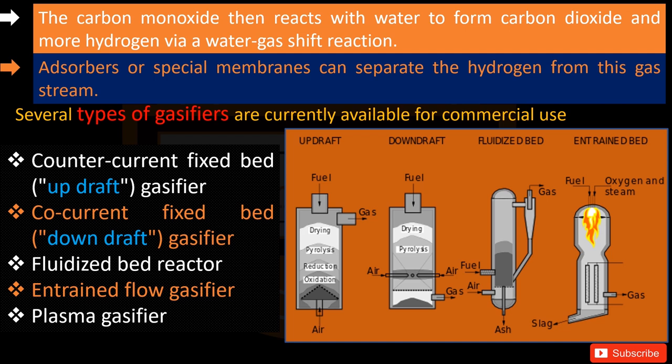In the entrained flow gasifier, a dry pulverized solid, an atomized liquid fuel, or a fuel slurry is gasified with oxygen — much less frequently, air — in co-current flow. The gasification reactions take place in a dense cloud of very fine particles. Most coals are suitable for this type of gasifier because of the high operating temperatures and because the coal particles are well separated from one another. In a plasma gasifier, a high voltage current is fed to a torch, creating a high temperature arc. The inorganic residue is retrieved as a glass-like substance.